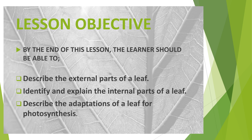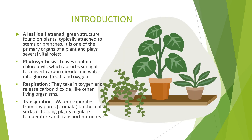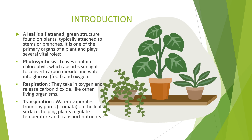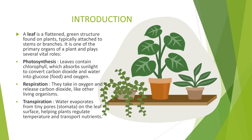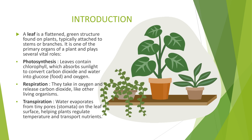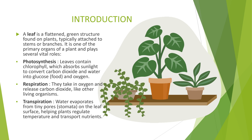A leaf is more than just a green thing attached to a plant — it's a vital organ that plays several crucial roles. Leaves are responsible for photosynthesis, respiration, and transpiration. Let's break down what each of these processes means and how leaves are perfectly adapted for them.